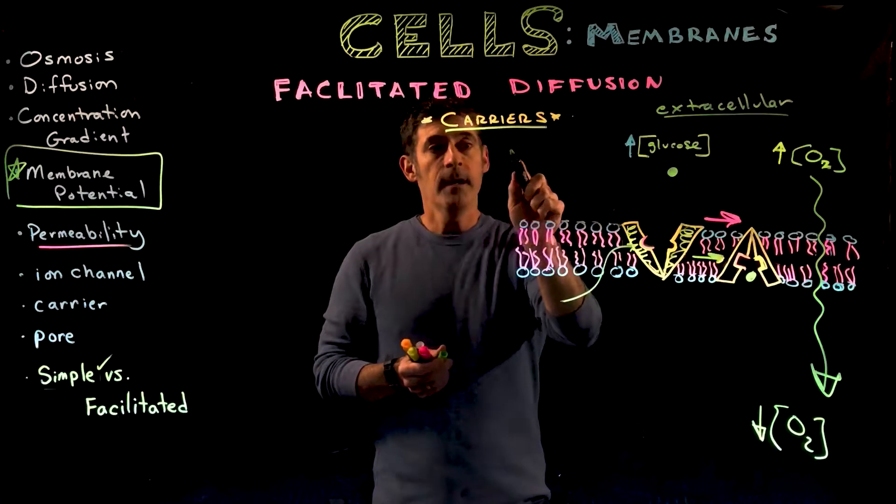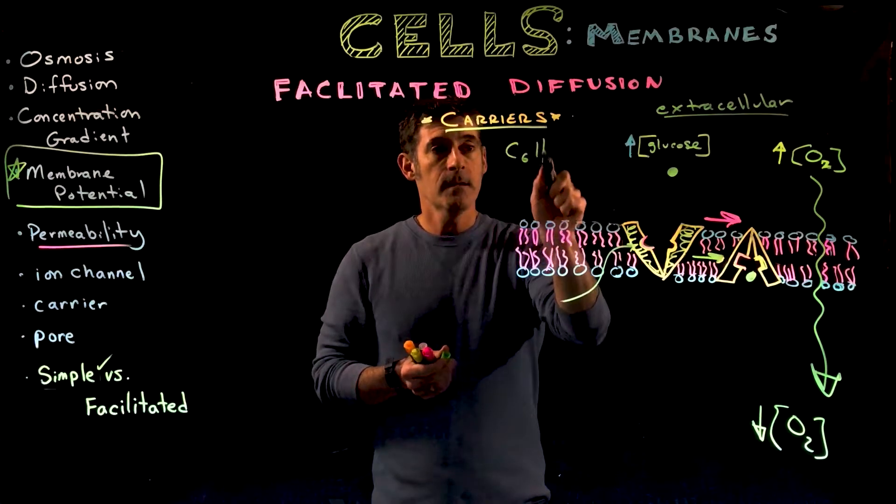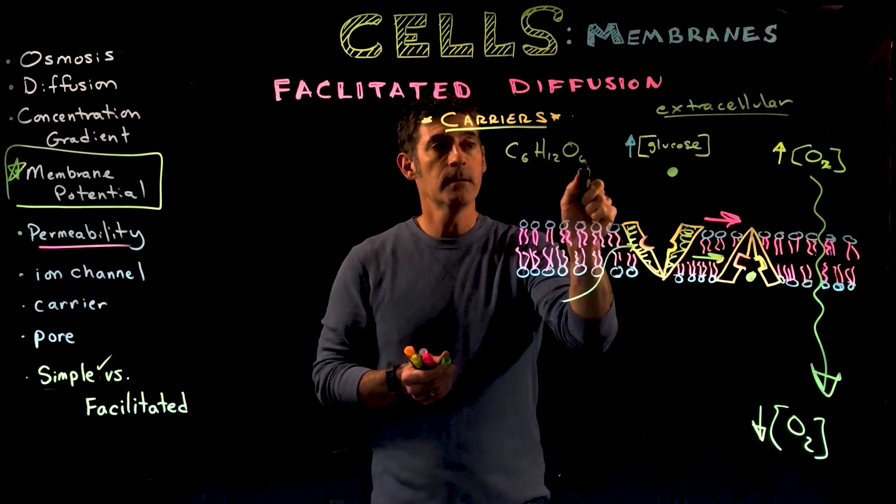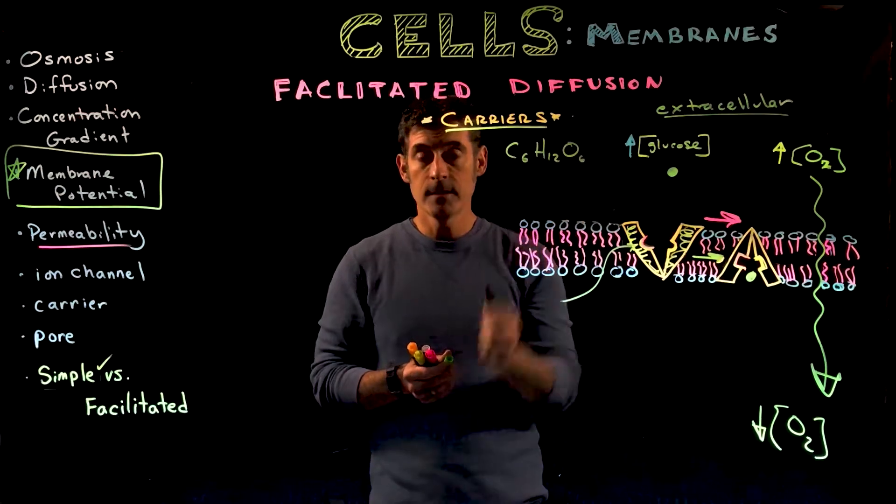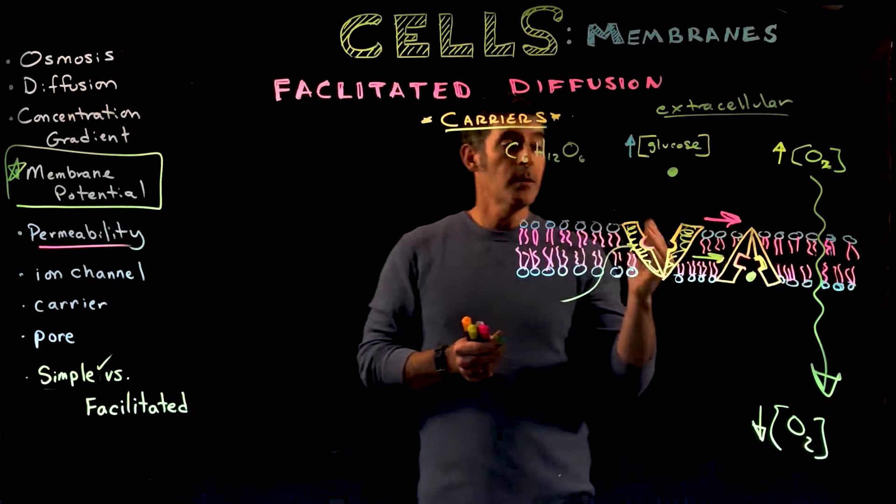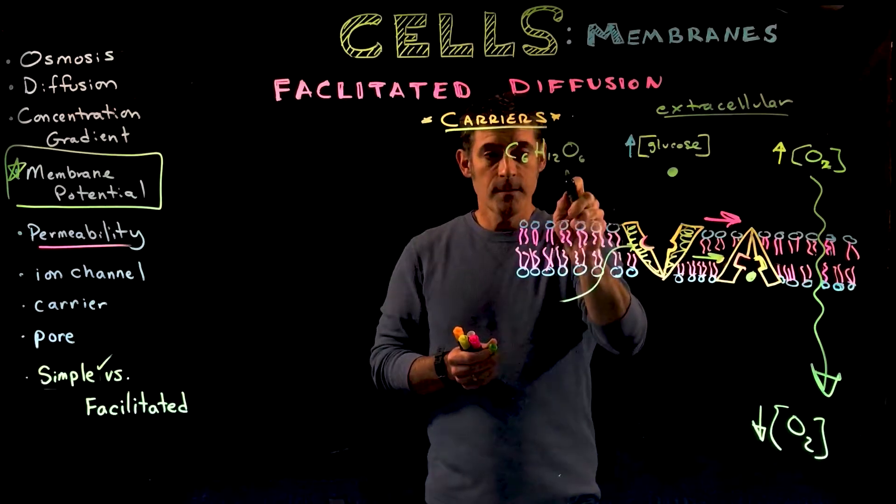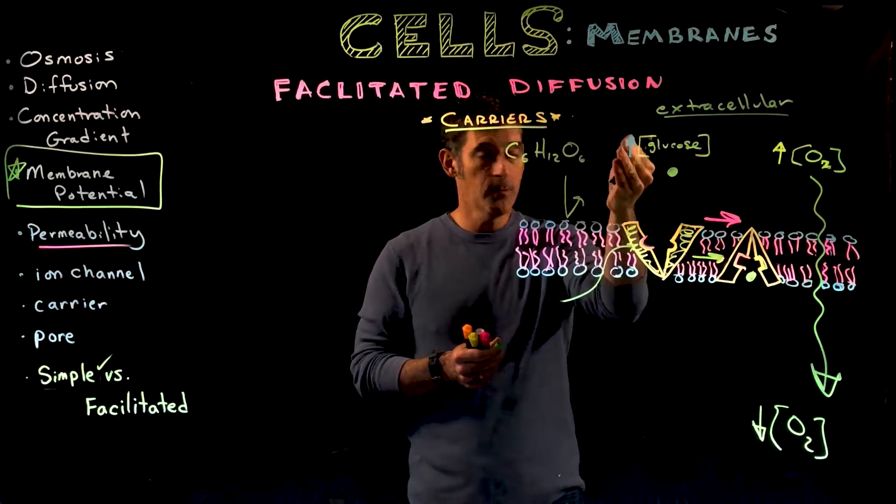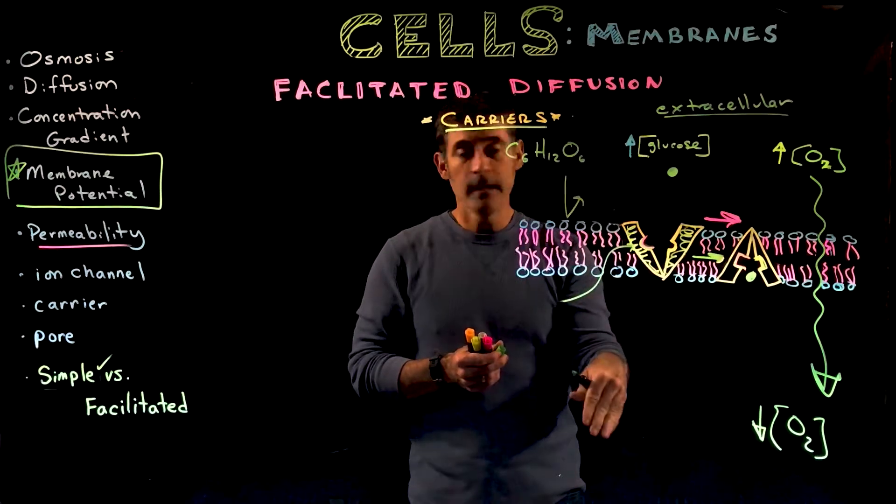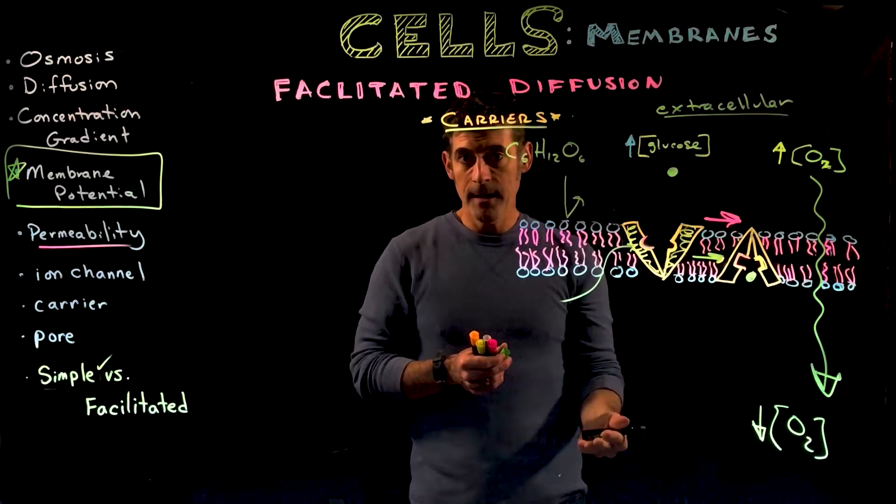A glucose molecule is C6H12O6—six carbons, 12 hydrogens, six oxygens. The glucose molecule can't get across the phospholipid bilayer. It's too big and too polar. Even if there's a really high concentration in one area and low in the other, it can't get across.